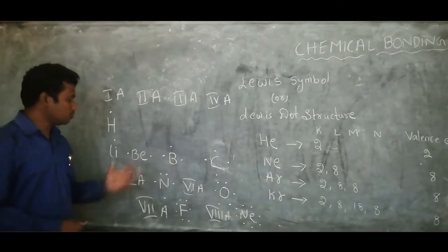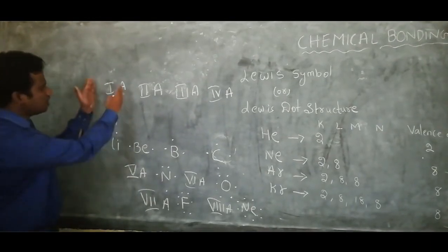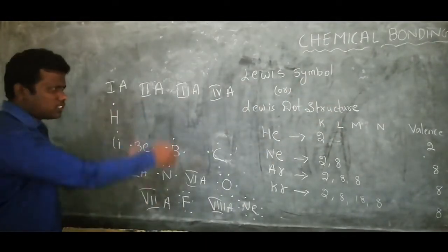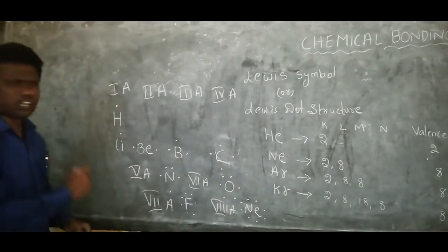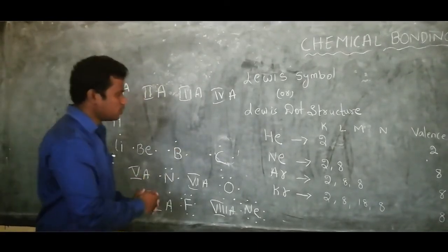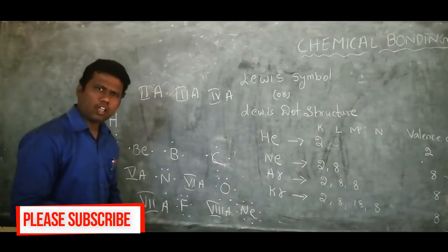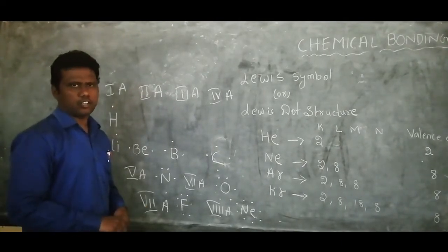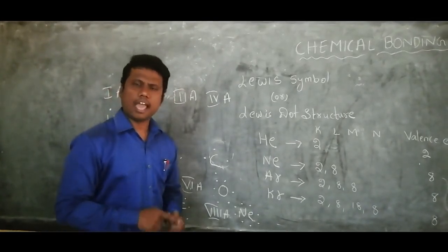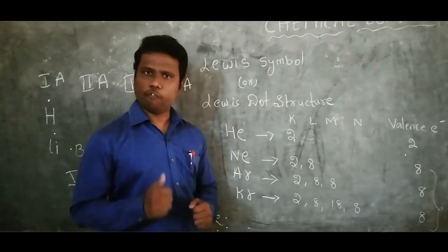Children, you can write many more examples. Drop all the dot structures in a particular pattern — divide them by groups one through eight, and write all the elements in each group. Each group will contain the same number of valence electrons, represented by dots. In our next video we will discuss about the electron theory of valence. Please subscribe to my channel to watch the next video. Thank you.